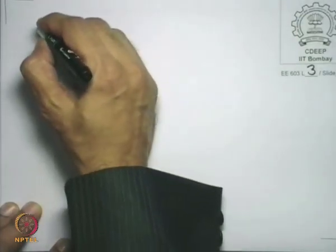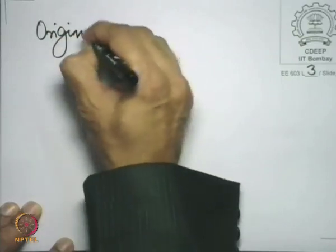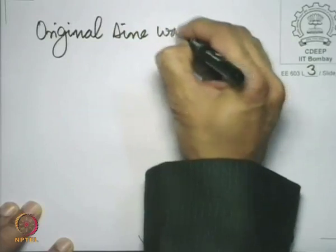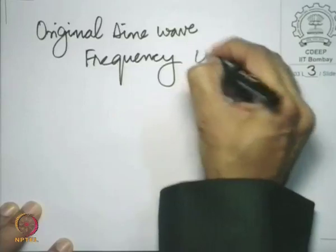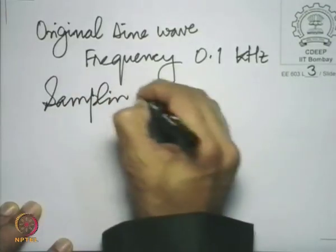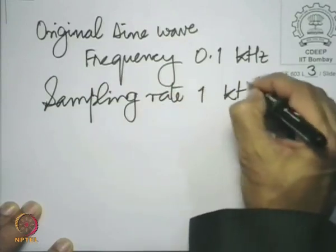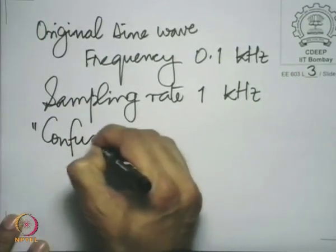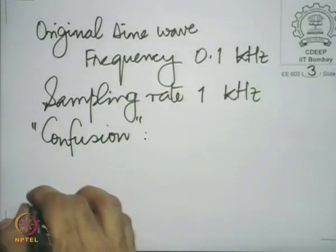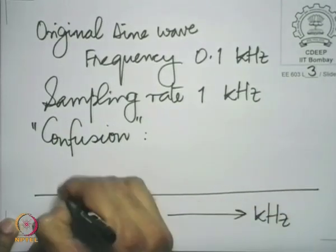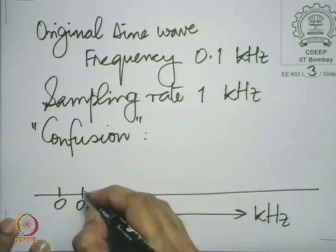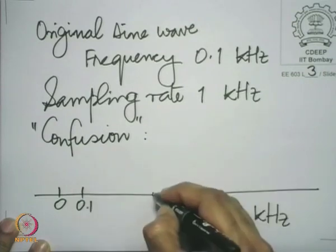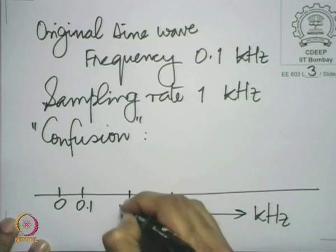What we had seen last time is that if you have an original sinusoid of frequency 0.1 kilohertz and a sampling rate of 1 kilohertz, then you land up with a confusion of sine waves. On the kilohertz scale, the samples could have come either from a 0.1 kilohertz frequency, or from a 1.1 or a 0.9 kilohertz frequency.